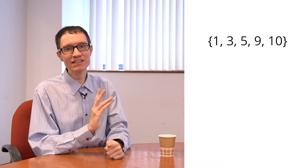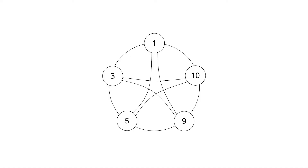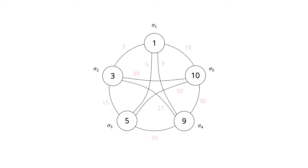Let's now consider a slightly more complicated example with five numbers: 1, 3, 5, 9, and 10. It's the same set that Praveen and Anand partitioned earlier, so we already know the correct partitioning. We're now going to use an Ising computer to partition this set. We have five cells representing our set, and the unknown sigmas represent the partitioning. If a sigma is +1, that number is in one partition; if it's −1, it's in the other. The connection strengths between the Ising cells are again given by the product of the numbers in the connected cells.